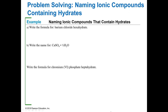Write the formula for barium chloride hexahydrate. Barium is 2+, chloride is 1−, so you need two chlorines: BaCl₂. Then hexahydrate means six H₂O, so you write BaCl₂·6H₂O. If a compound has half a water — just to make the numbers work out — the prefix for half is hemi.